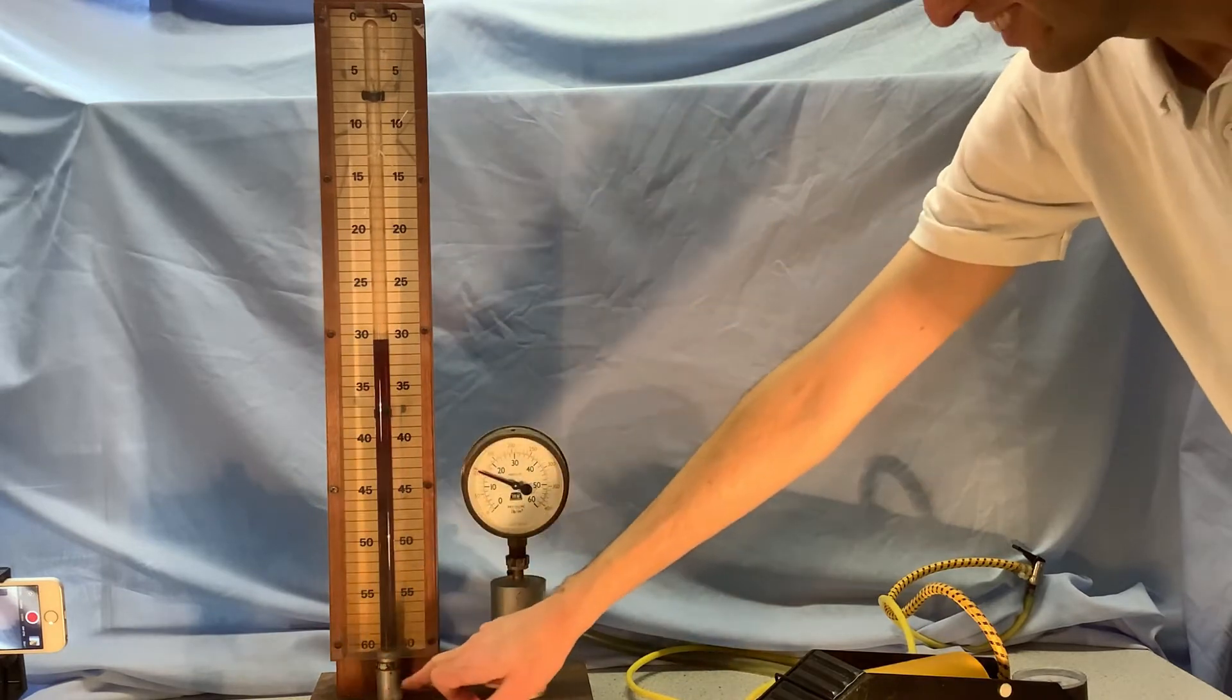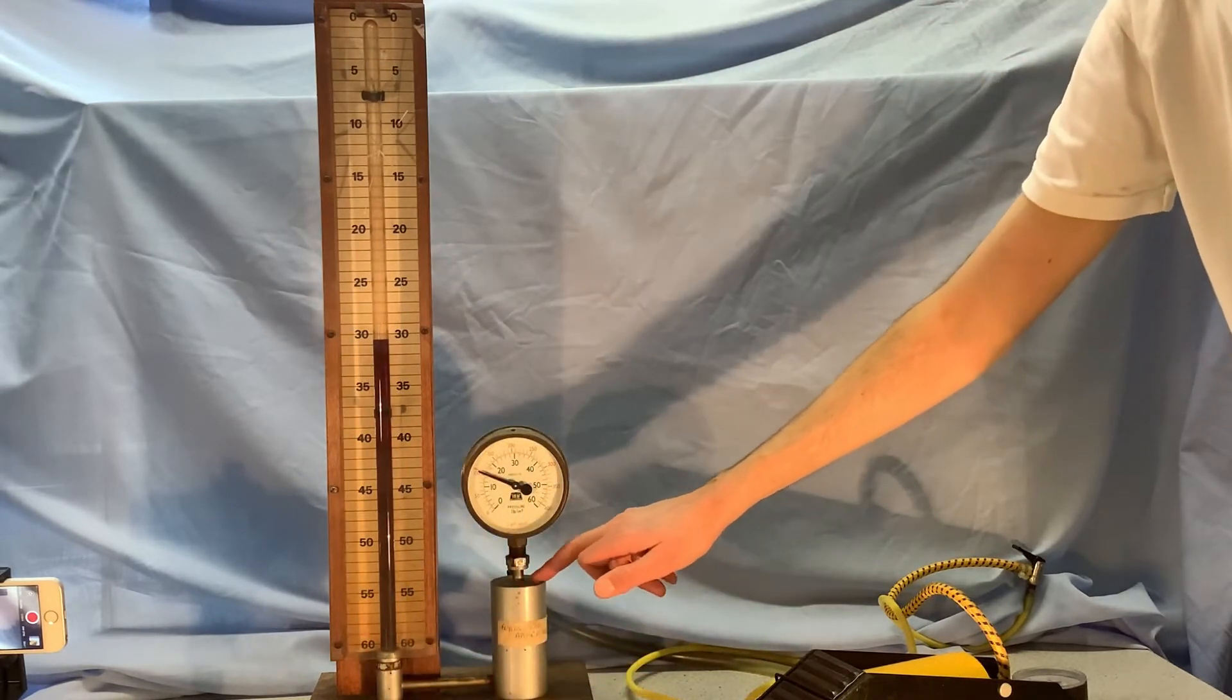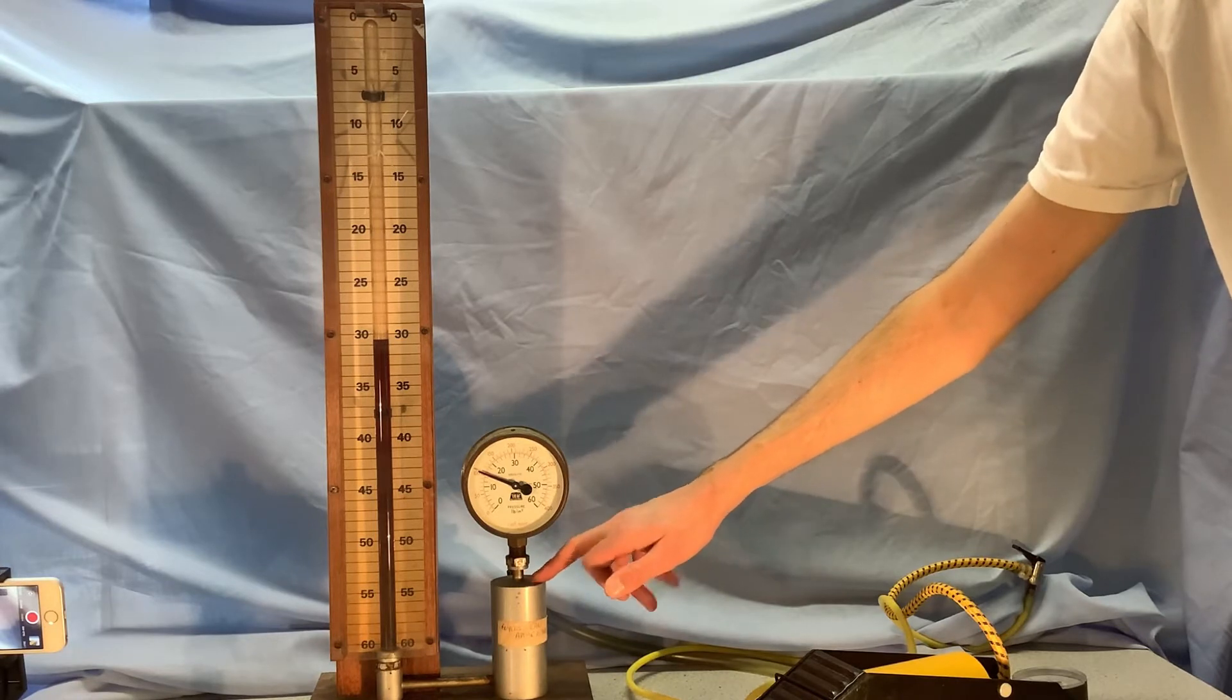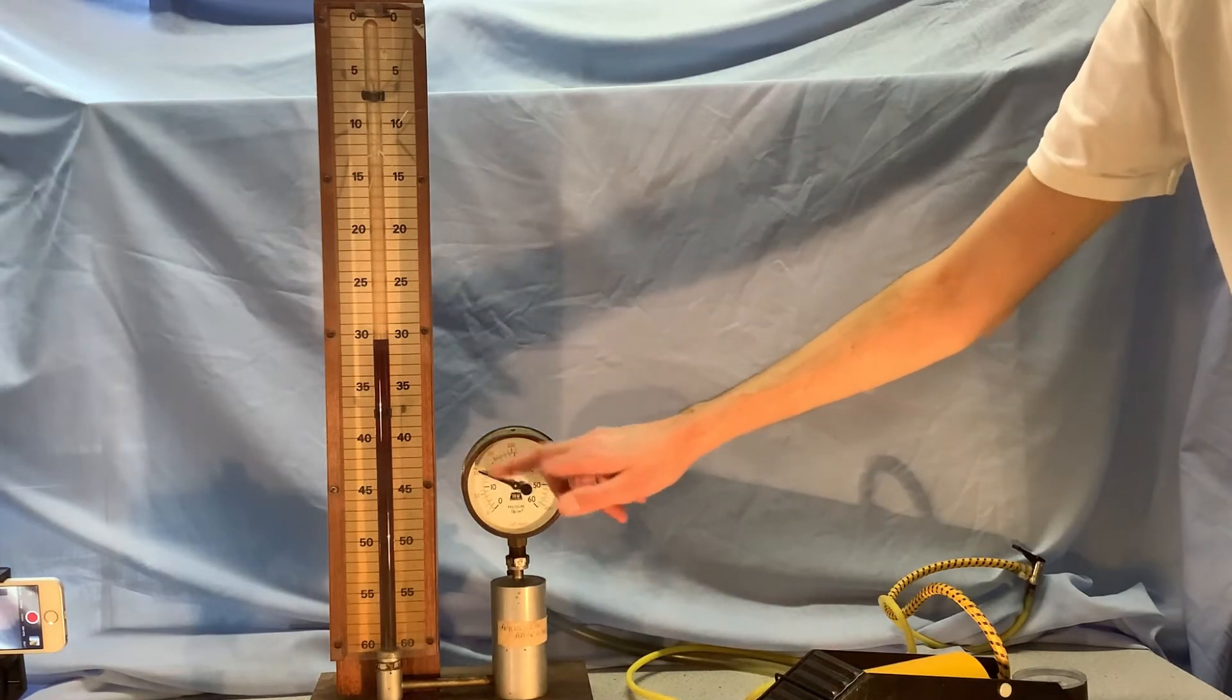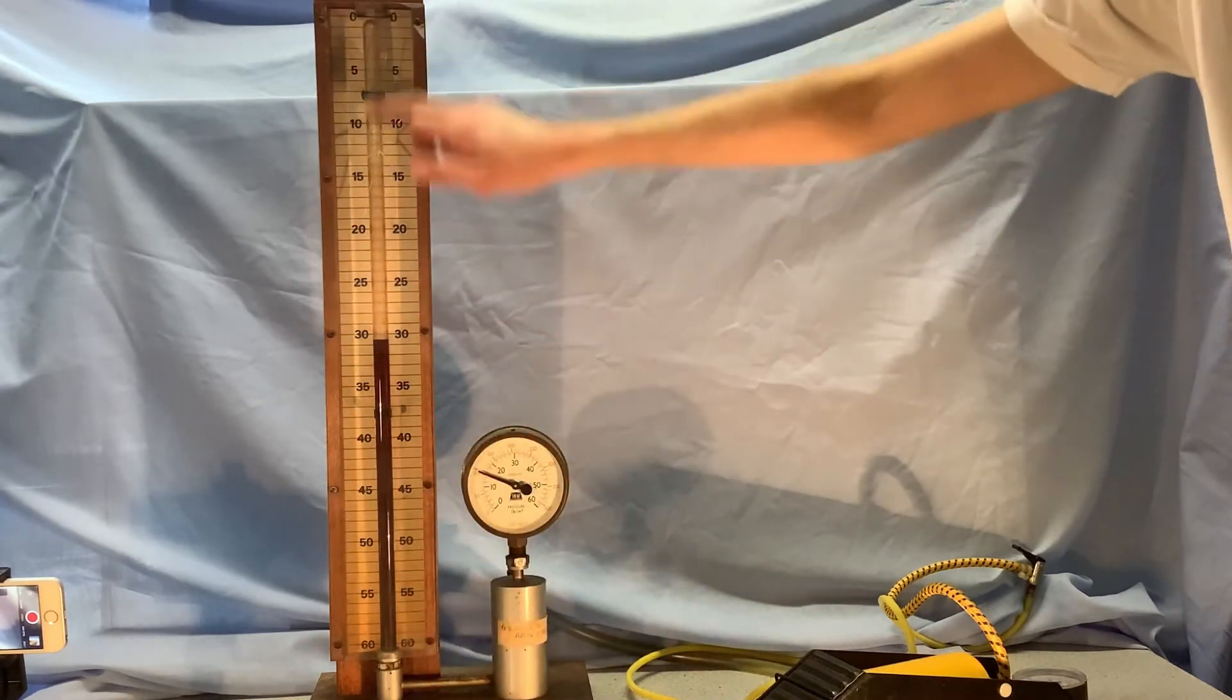Then we have some liquid which is linked via this system to here and we can pump air into here, and this will measure the pressure here and because it's linked by the fluid the pressure inside here will be the same.